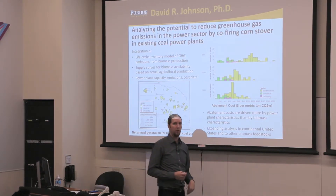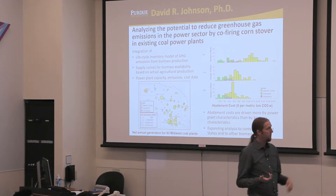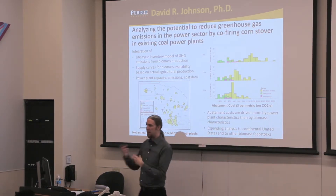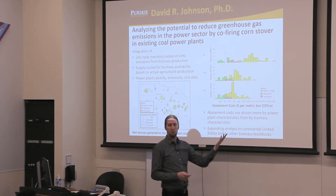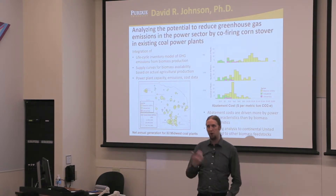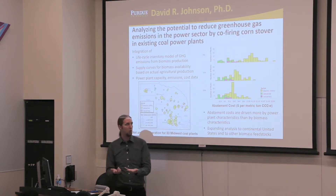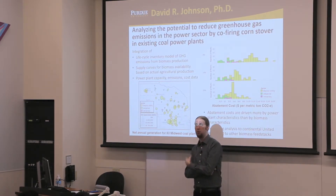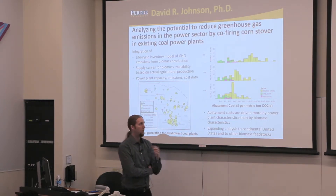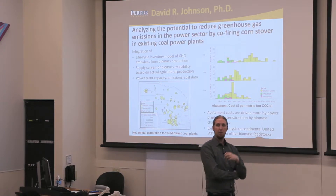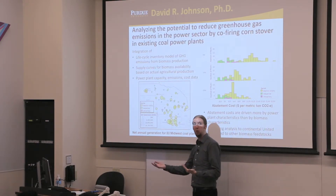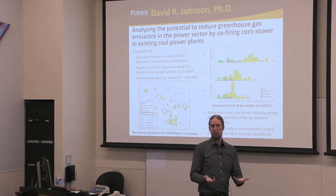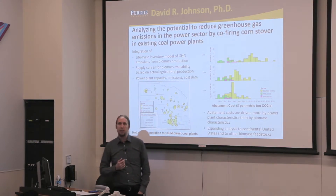What you could potentially do is take that biomass and fire it in existing coal power plants as a fuel instead of coal. Most power plants can be repowered to get about 5 to 20 percent of their energy from biomass without making big changes to the boiler designs. There are some incremental operational costs associated with processing the biomass, but it's technically feasible and would represent a way to reduce greenhouse gas emissions associated with energy production.